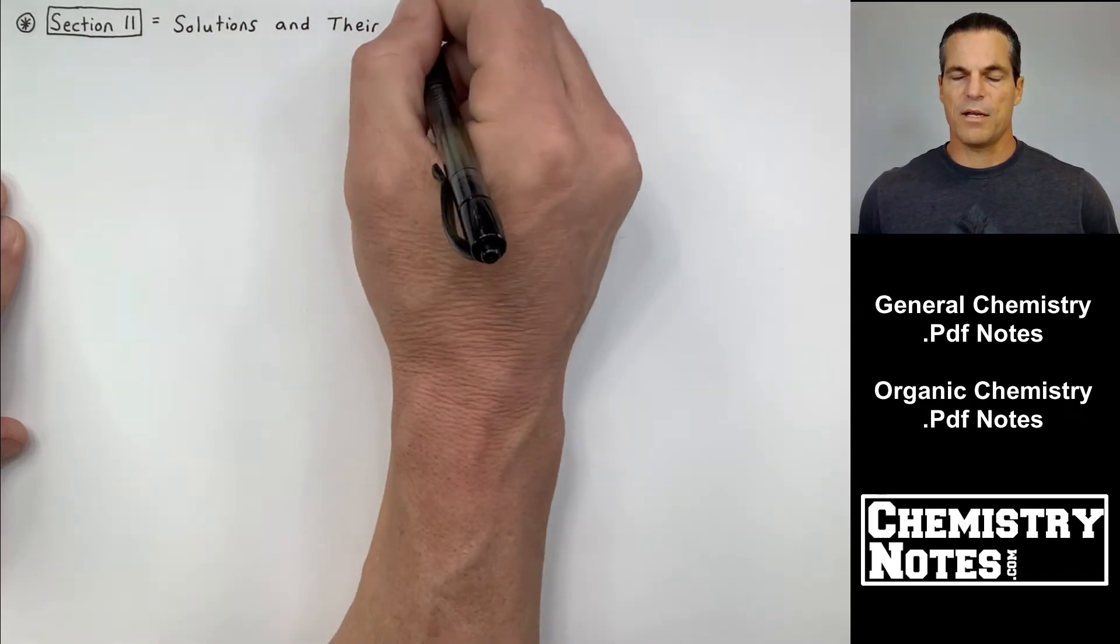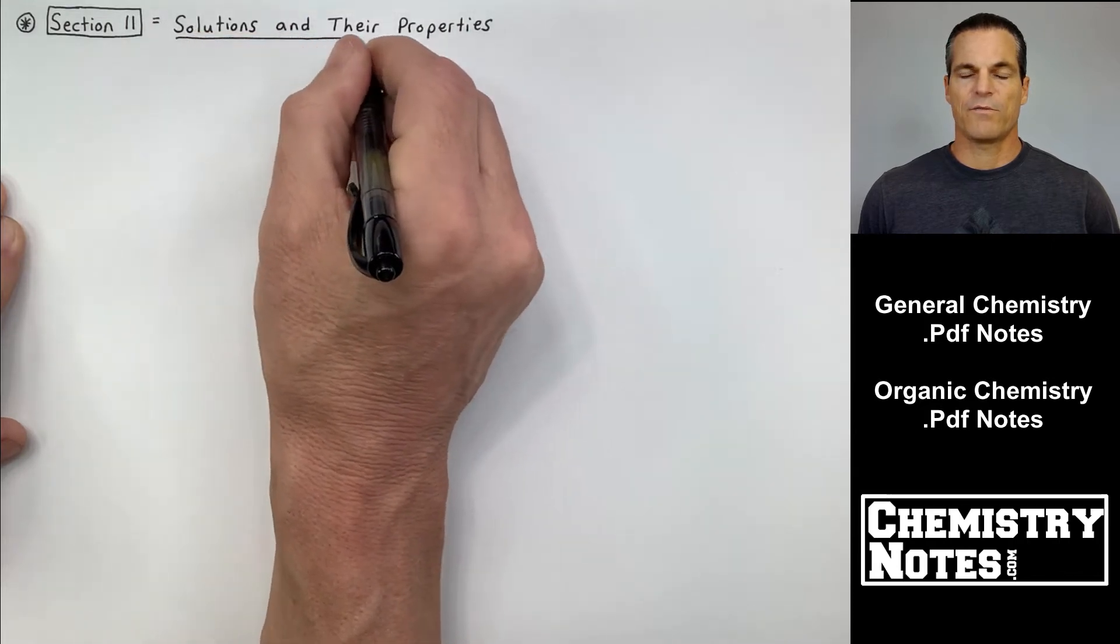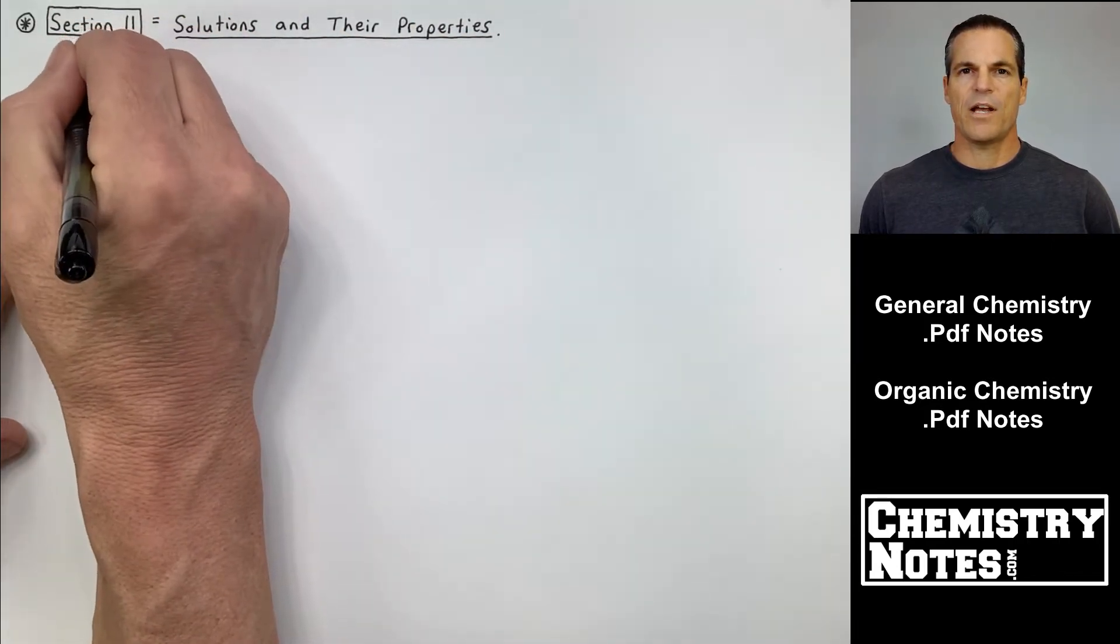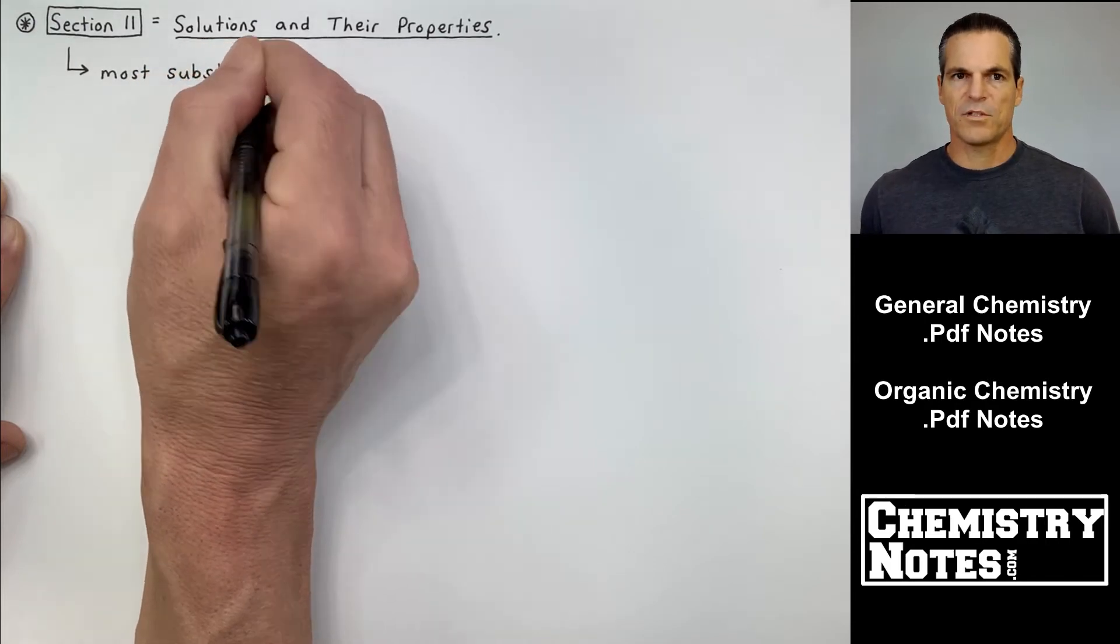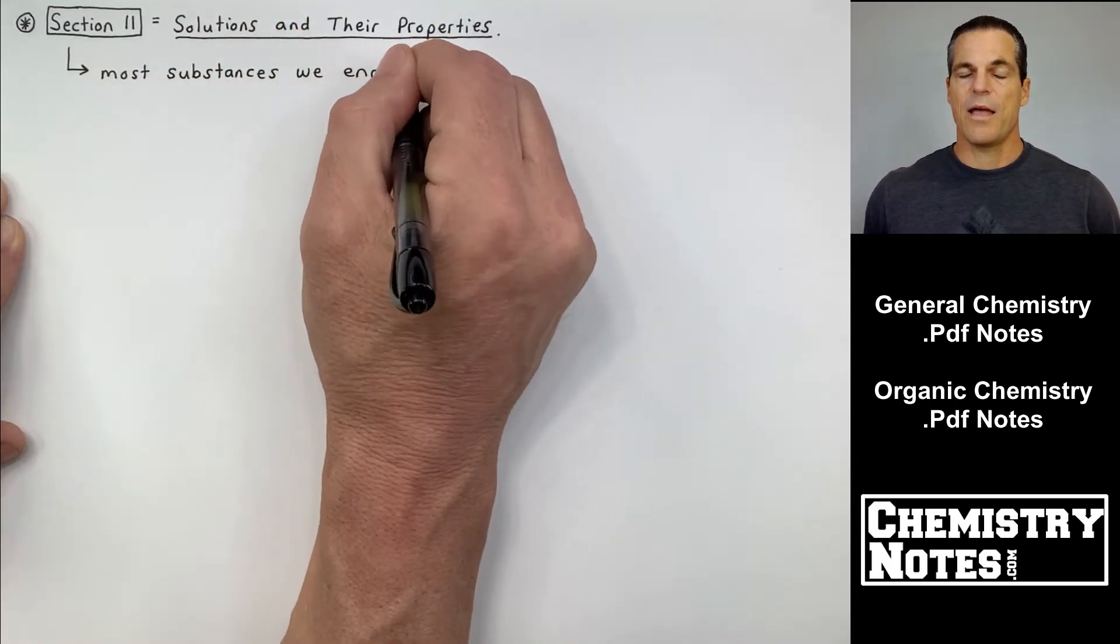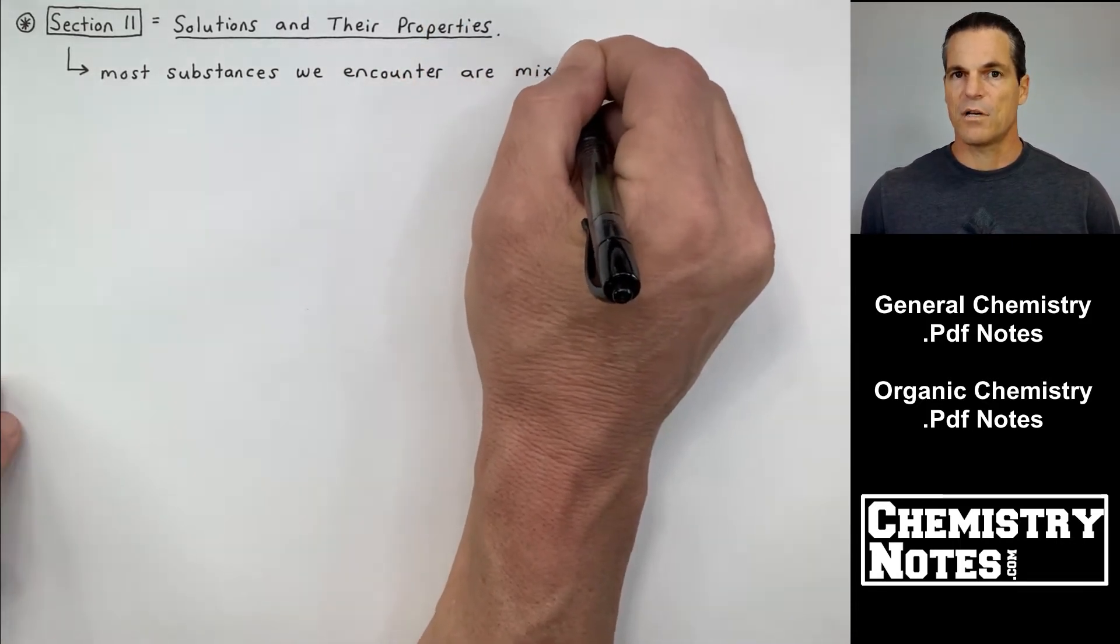We just finished chapter 10, right? Chapter 10 was liquids, solids, and intermolecular forces. And at the very end of chapter 10, we talked about vapor pressure of liquids. And then we're starting now to get into liquids that have solutes dissolved in them. And we'll get into that. Those are called solutions.